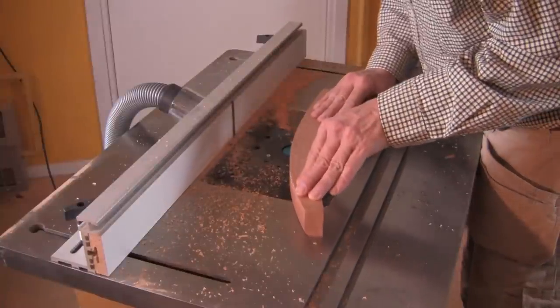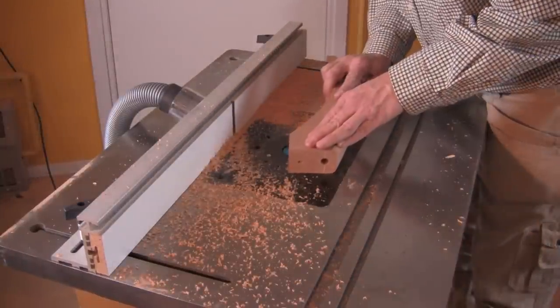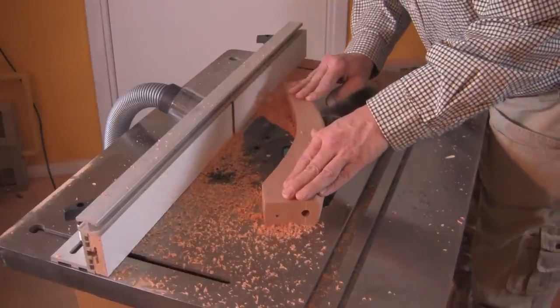With that done, I used a round-over bit in my router table to add shape to the curved legs. Then it was on to sanding the legs, the last step for them before assembly.